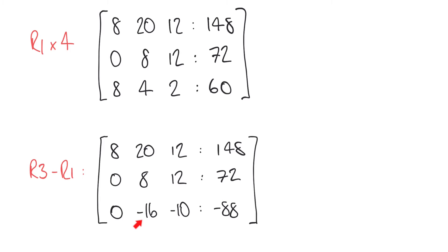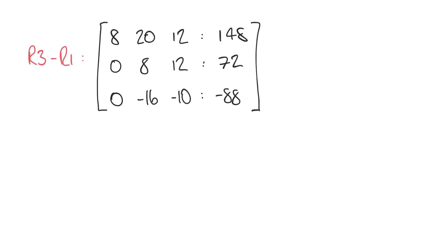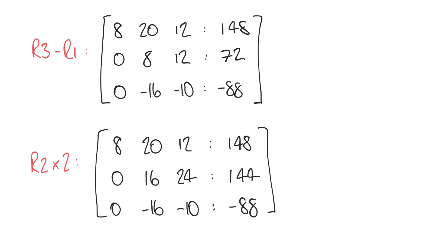And so what I'm going to do is multiply this middle row by 2 and when we do that we have now the middle row 0, 16, 24 and 144.